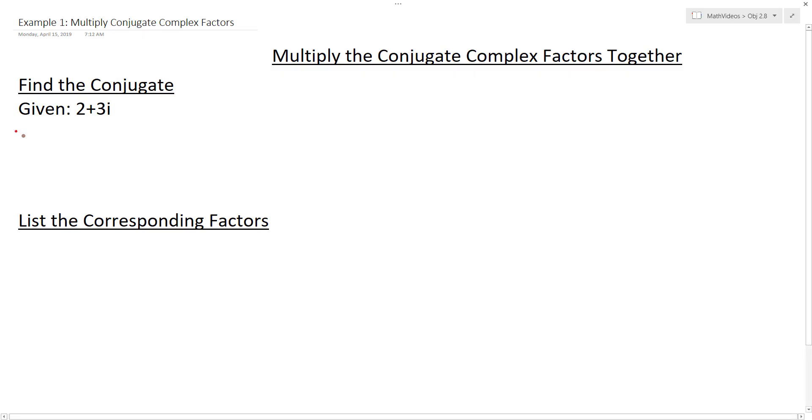The focus of this lesson is on multiplying conjugate complex factors together. We're going to start off with the complex number 2 plus 3i. So in order to get the conjugate, it needs to have the same real part and the opposite imaginary part.